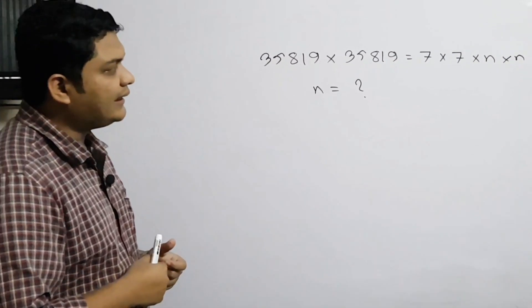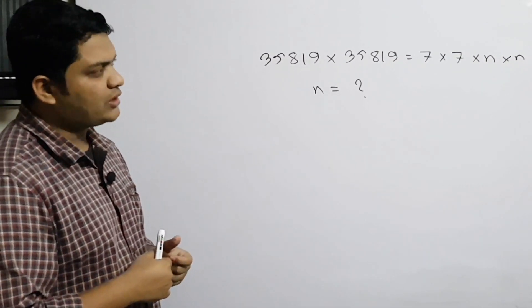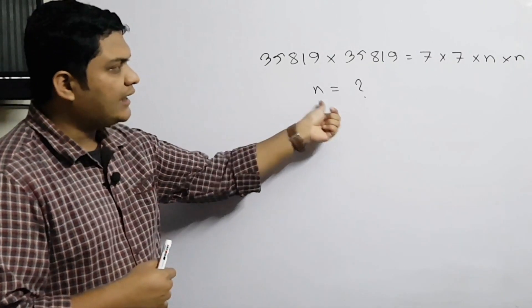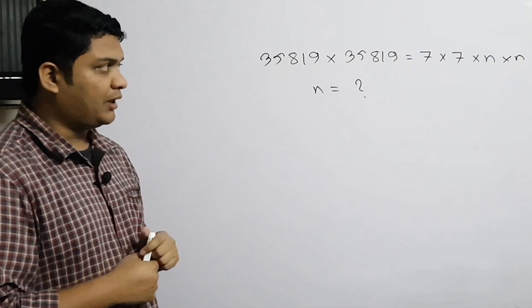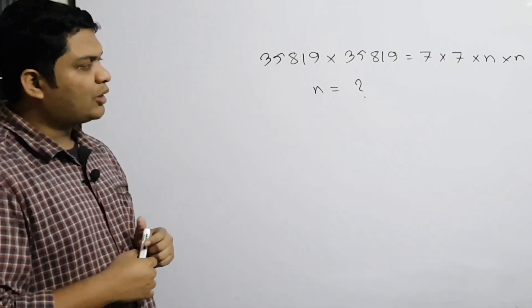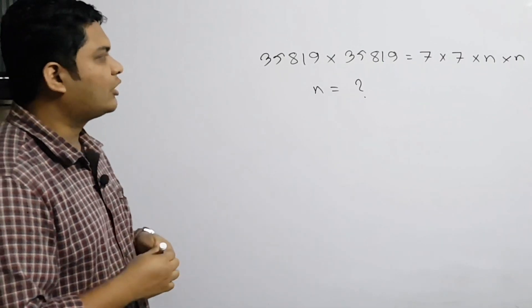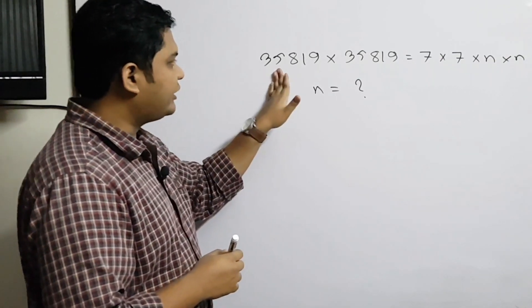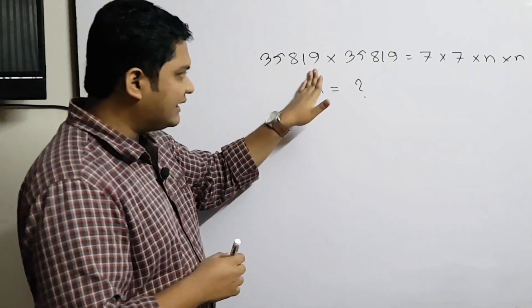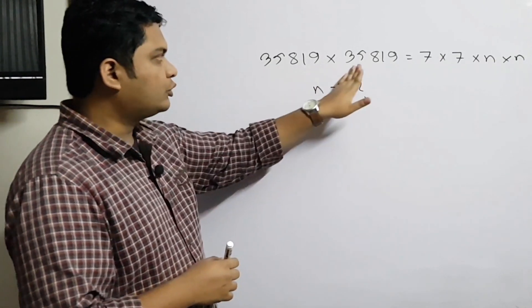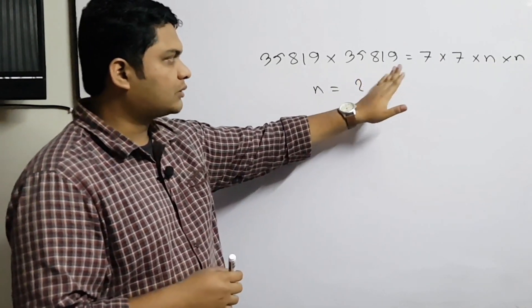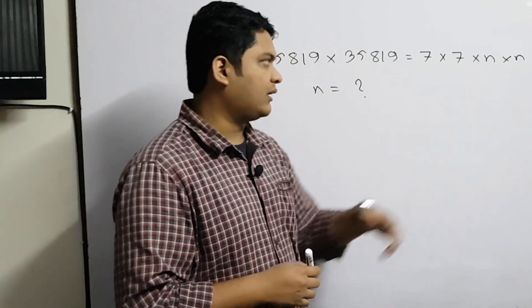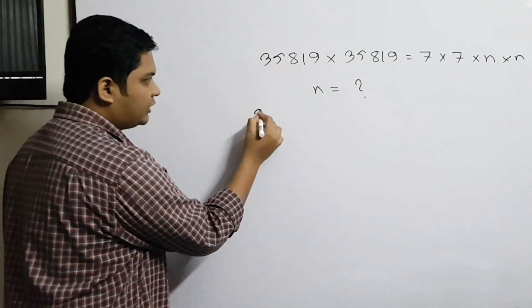35819 × 35819 is equal to 7 × 7 × n. What is the value of n? I will give you this question: 35819 × 35819 = 7 × 7 × n. Find the value of n.